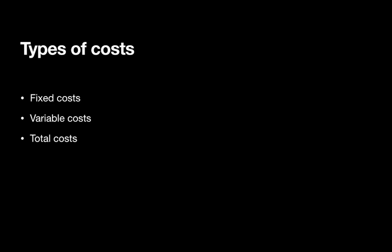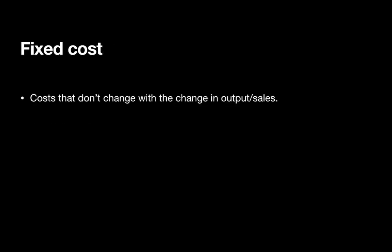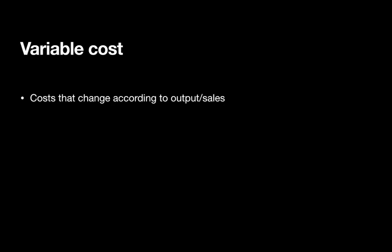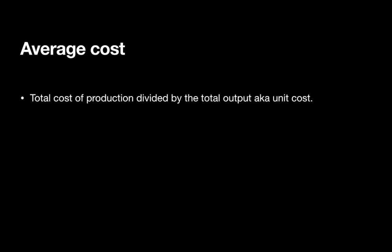There are three types of costs: fixed cost, variable cost, and total cost. Fixed costs are those costs that don't change with the change in output or sales. Variable costs are costs which change according to the output or sales. Total cost is the sum of variable and fixed costs. Average cost is the total cost of production divided by the total output, which is also known as unit cost.